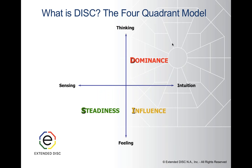I like to begin with the DISC model itself. The DISC model is basically these four quadrants, and you can see where D, I, S, and C come from. Whenever I use the word model, I always tell participants, think of it as a map. Basically where you are graphed on this map tells you what your behavioral style is. And you can see that there's dominance, influence, steadiness, and compliance.